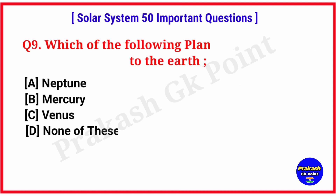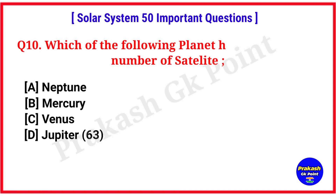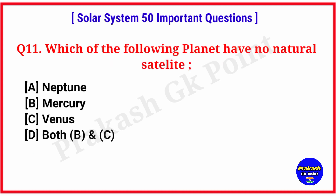Which of the following planets is the nearest planet to the Earth? Answer: option C, Venus. Which of the following planets has the maximum number of satellites? Answer: option D, Jupiter.